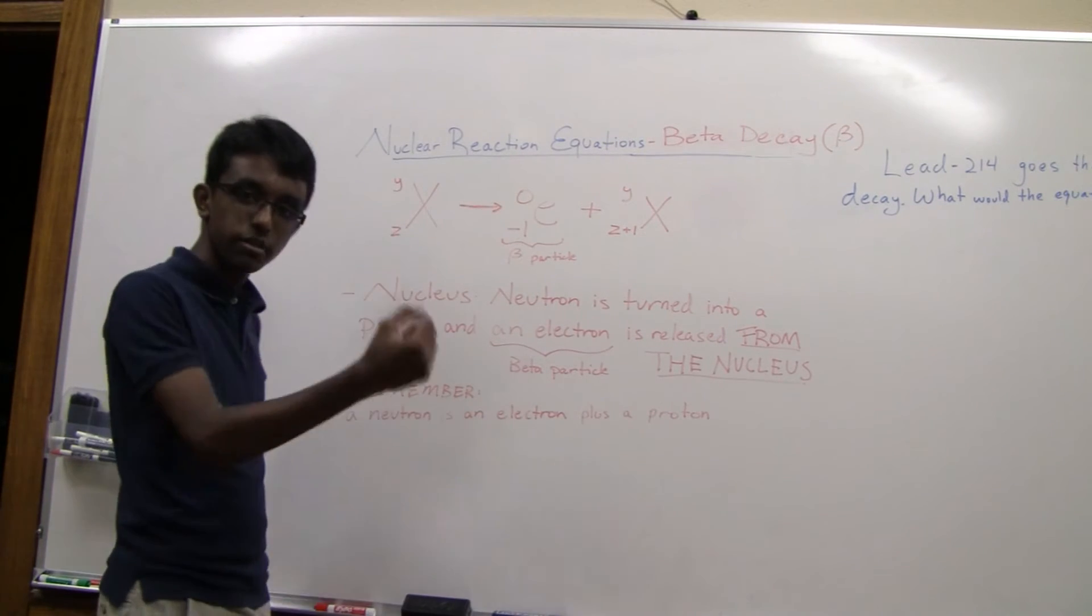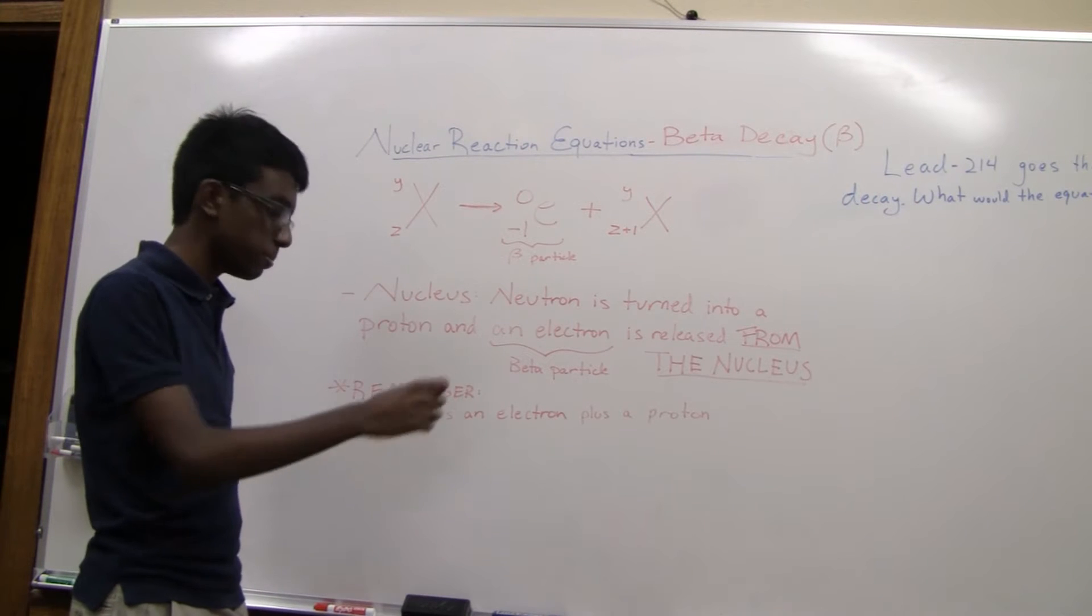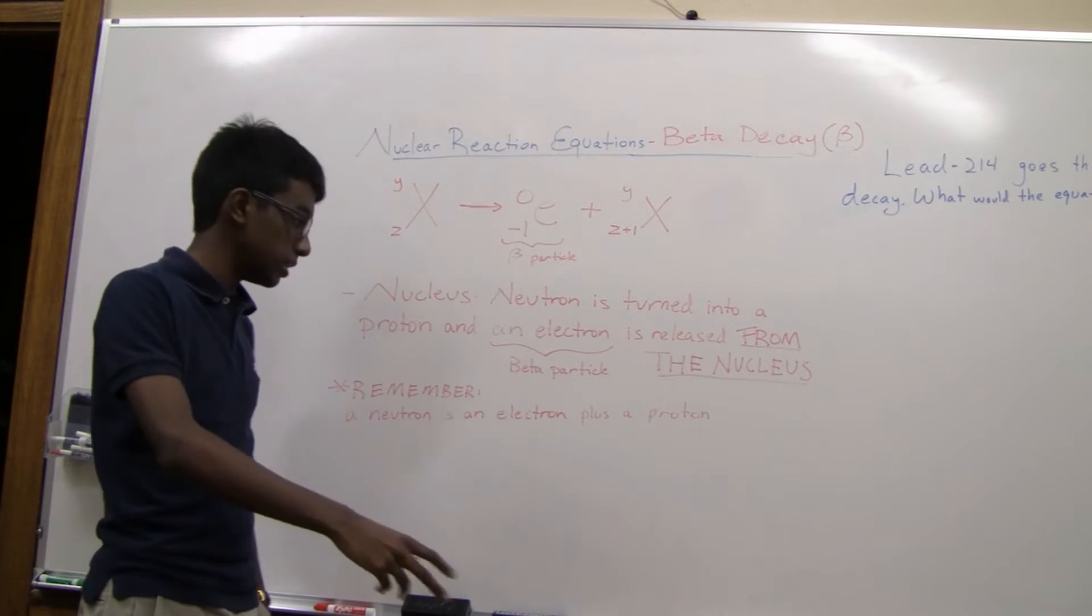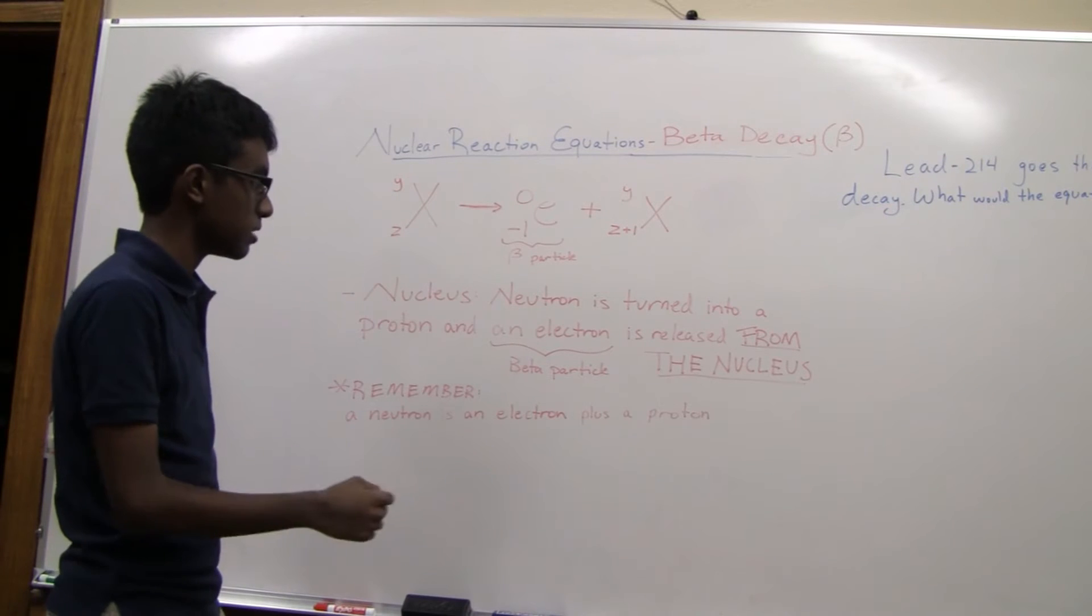So what happens is you have your neutron, and it's going to split into a proton and an electron. The electron is released as a beta particle, and the proton stays in the nucleus.